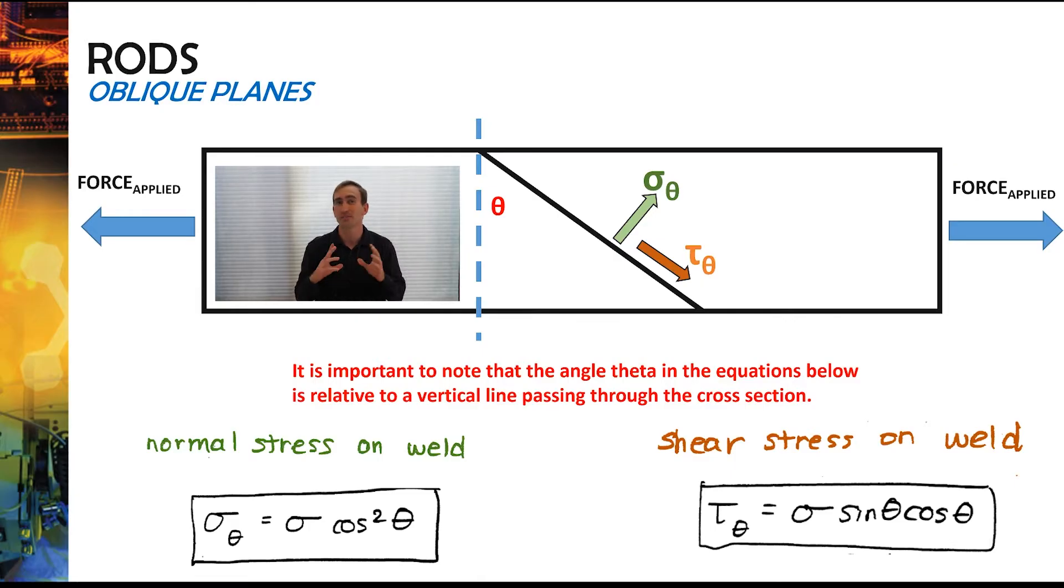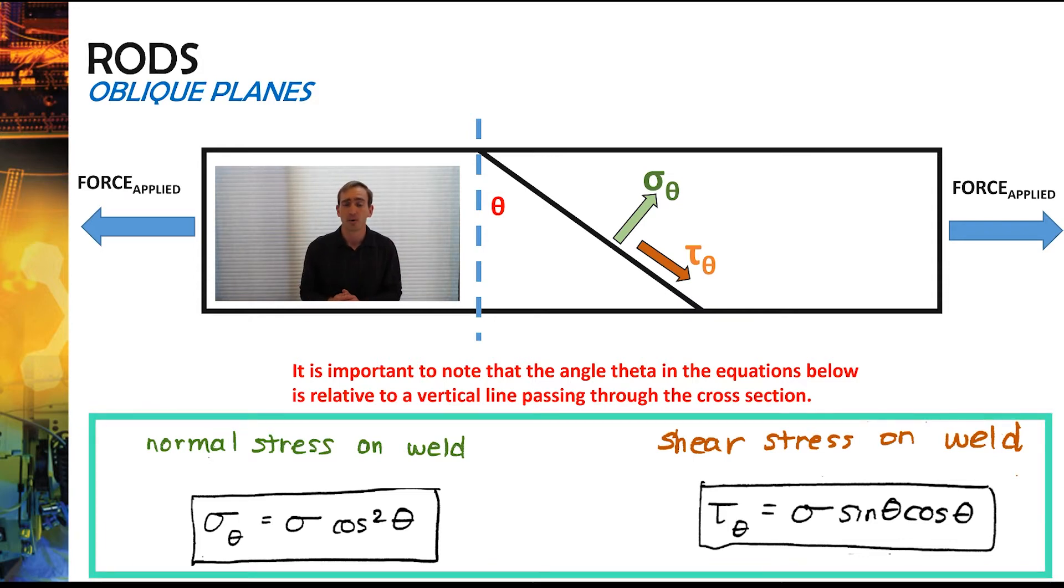Effectively you can go through some derivations of calculating different areas and things like that, but ultimately what comes out of all of this is you get two equations. The way to calculate normal stress on the weld is to take the regular stress that you've calculated, which is just force over area inside of that section, and multiply it by a factor of cosine squared theta.